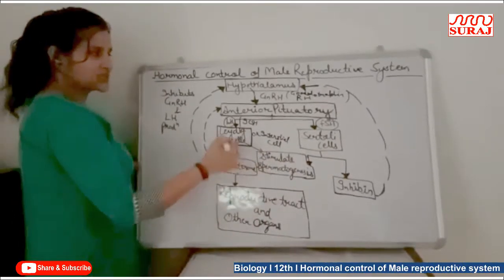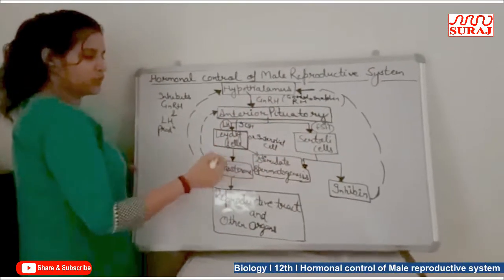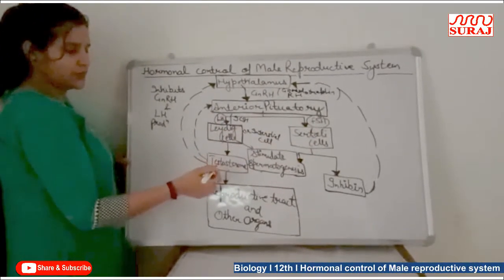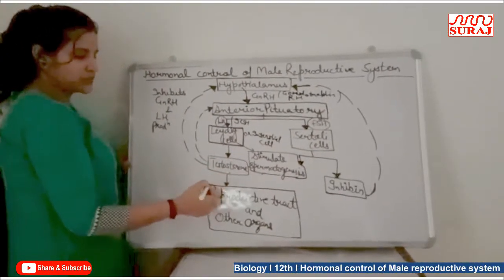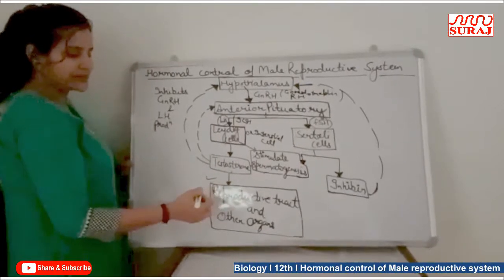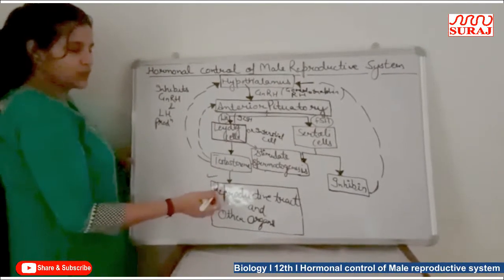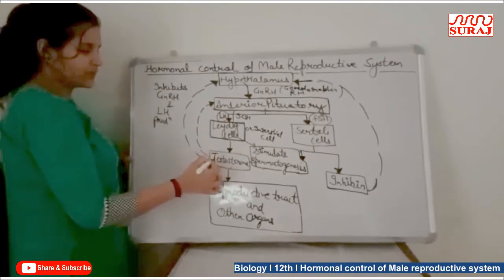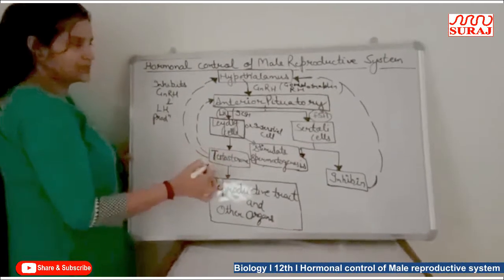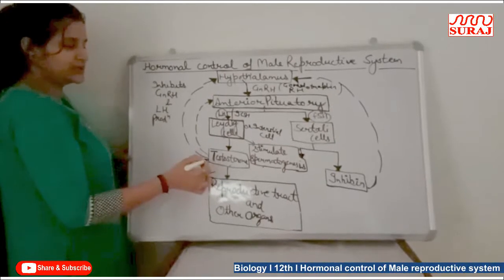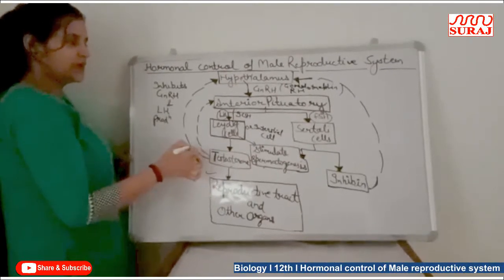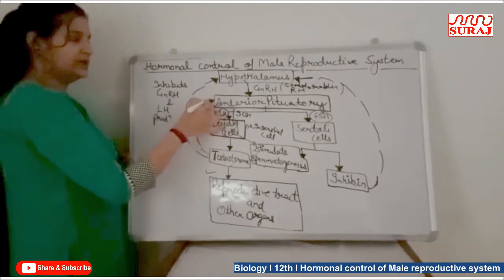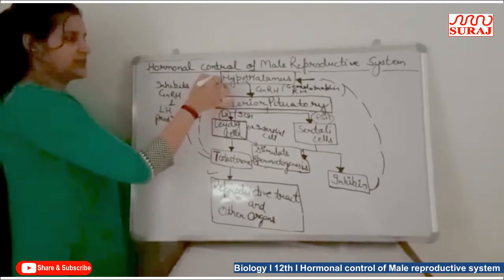This whole process is known as the negative feedback control system of our hormones, which maintains the reproductive tract and other organs in a normal functional mode. However, when excess testosterone is present at the gonad region, it inhibits the anterior pituitary as well as the hypothalamus.